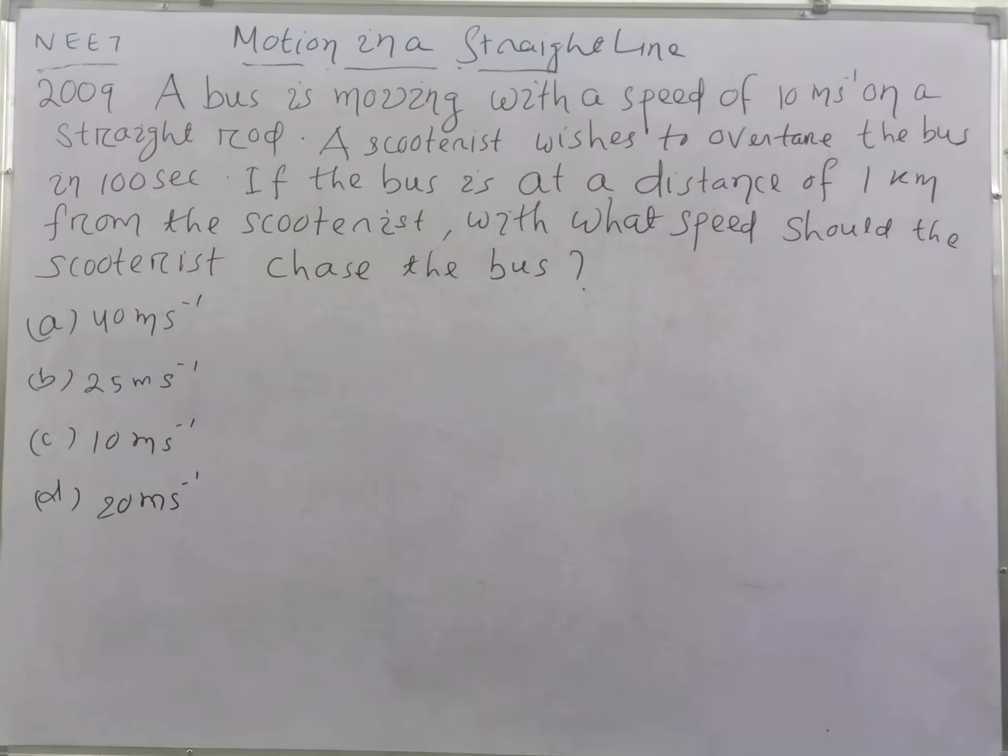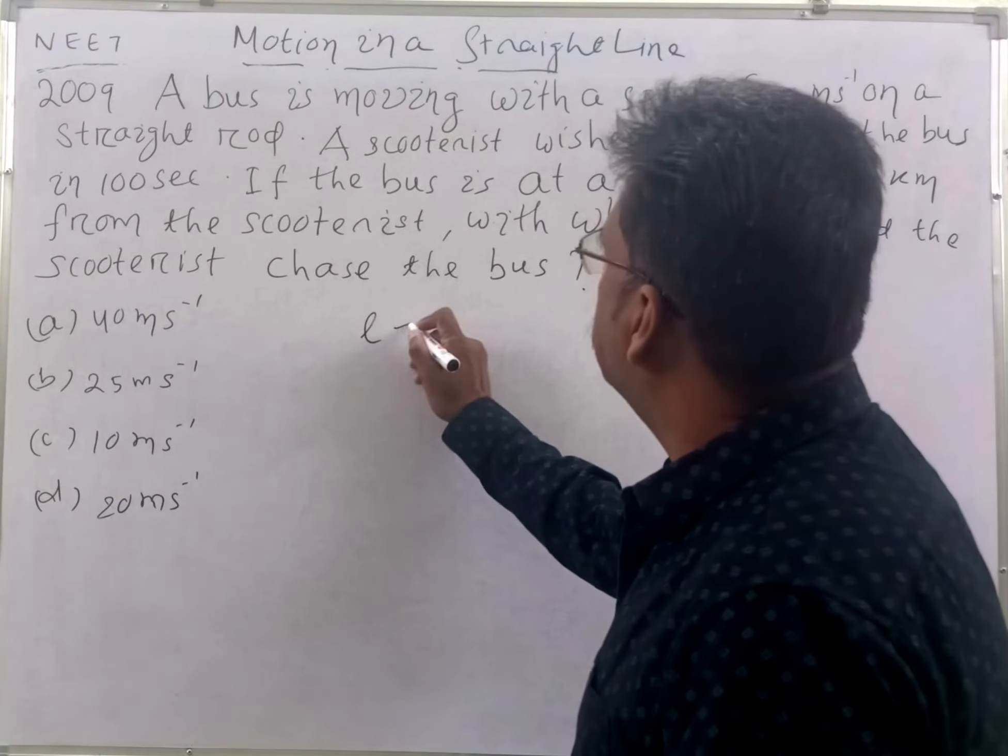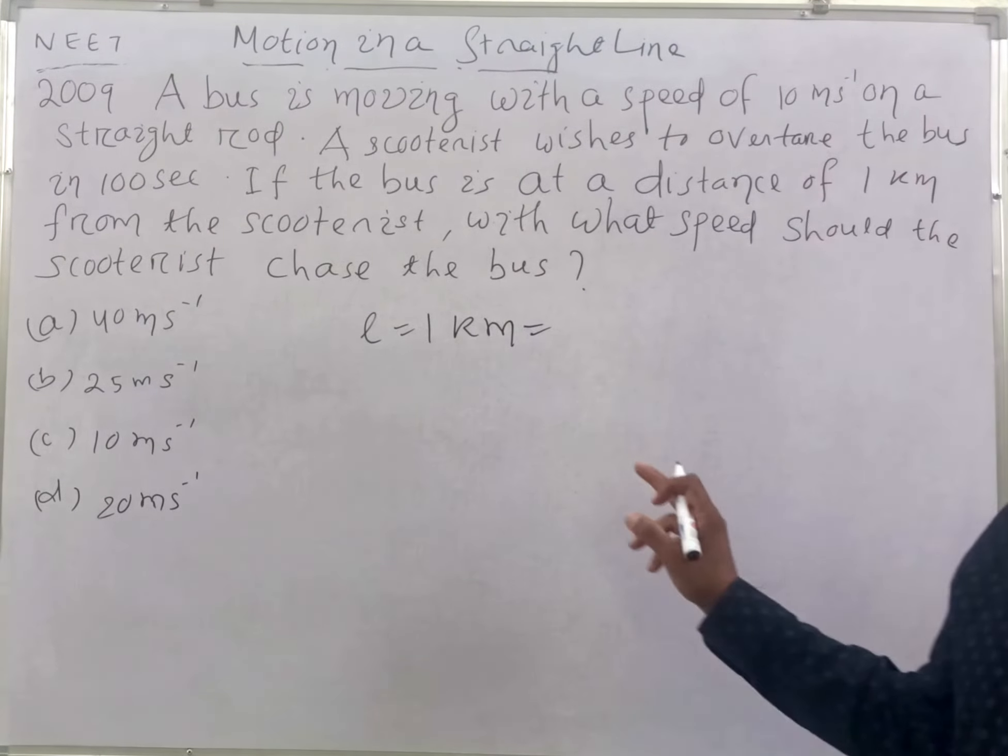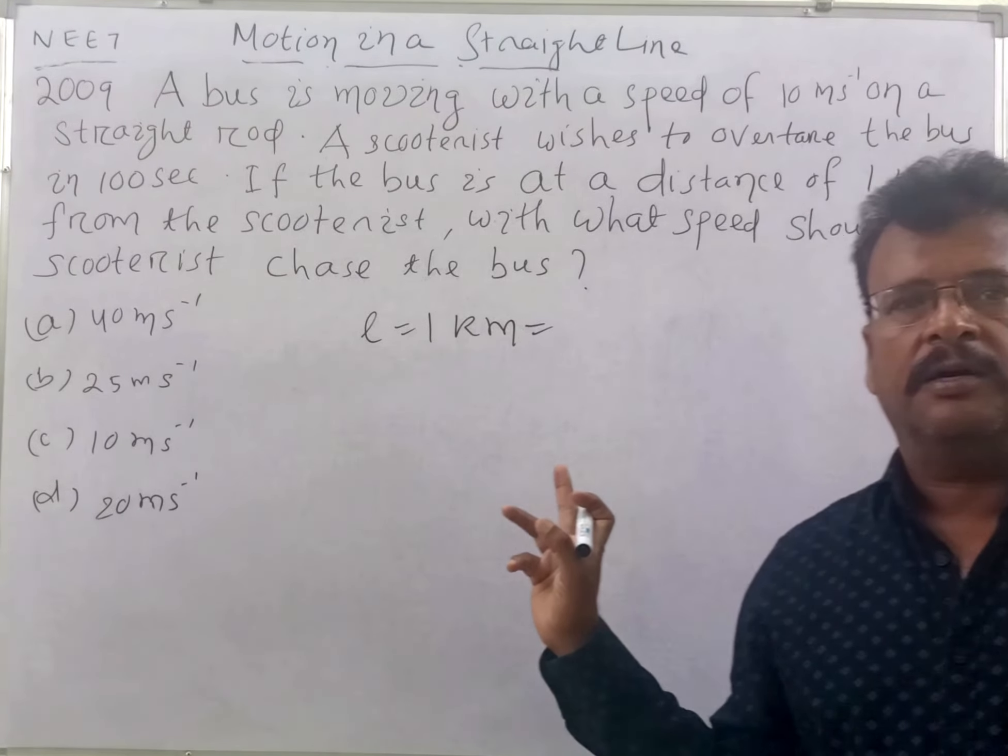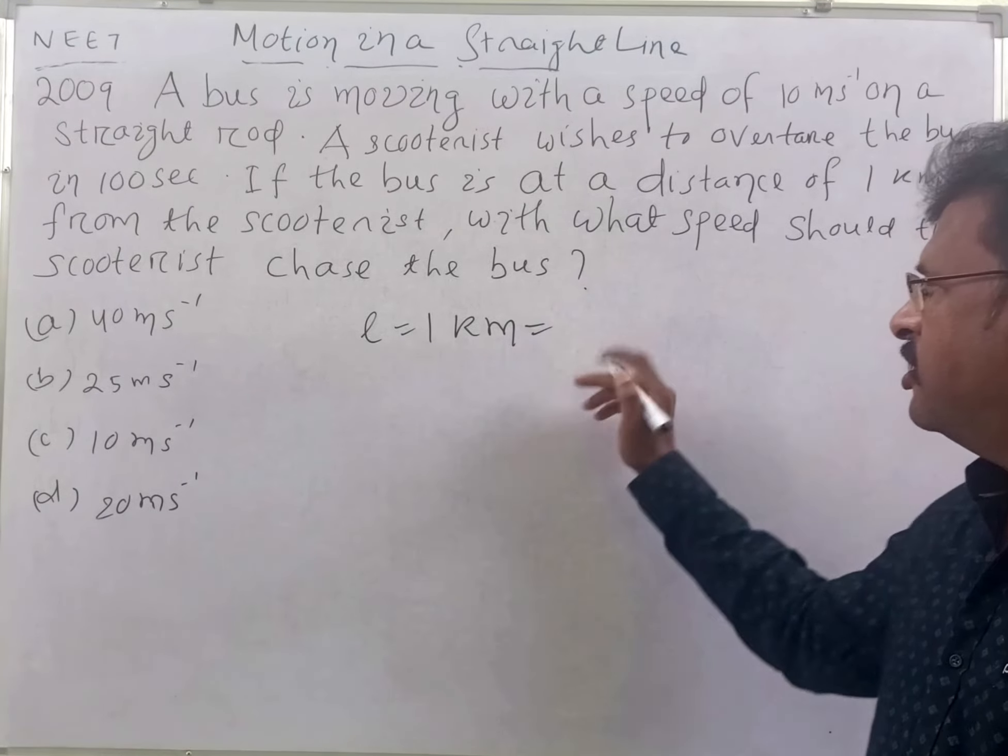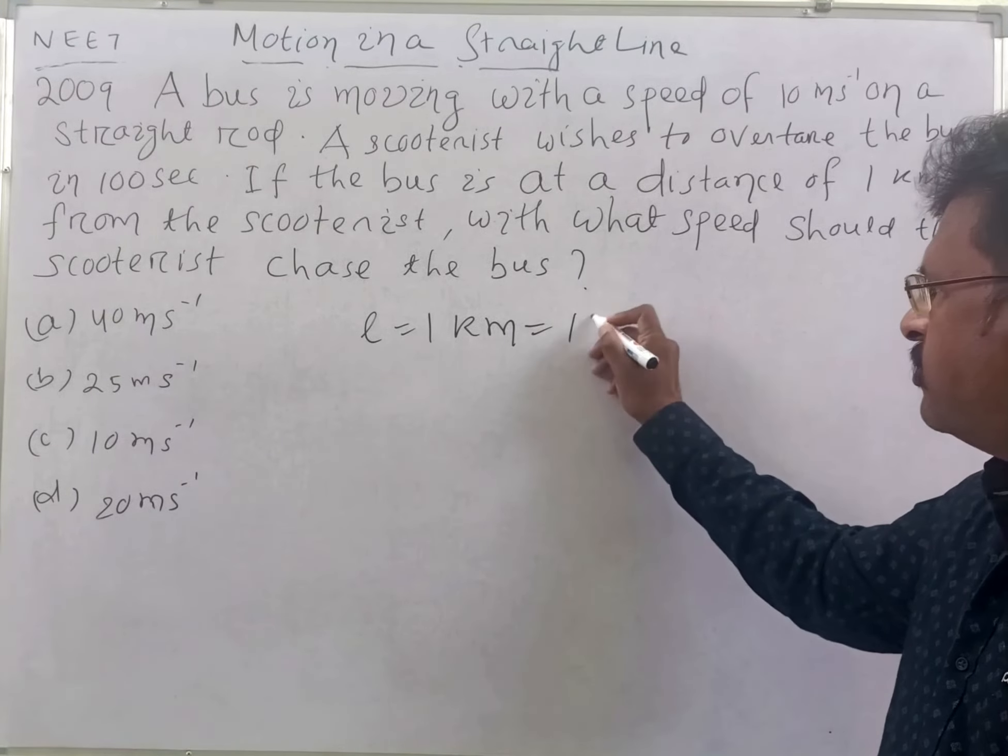This question is related to velocity and distance. The distance is 1 km. What is the SI unit of length? That is meter. What is the relationship between kilometer and meter? 1 km equals 1000 meters.